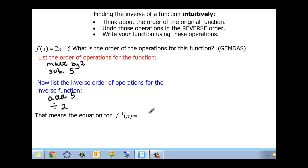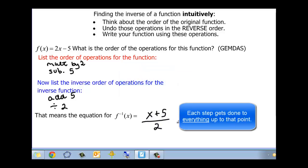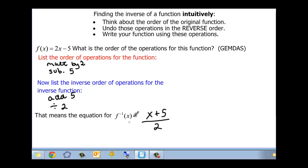So that means that I start with my x, and I add five to it. That's the first step. And then from there, I'm going to divide by two. And you have to divide everything you've done so far by two. So x plus five all over two would be my function, my inverse function.